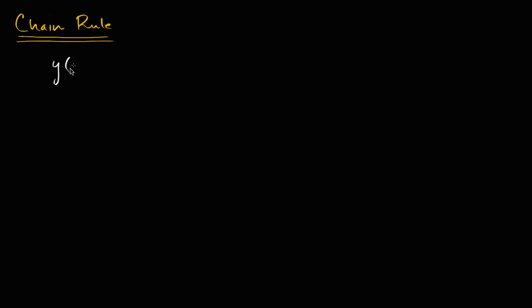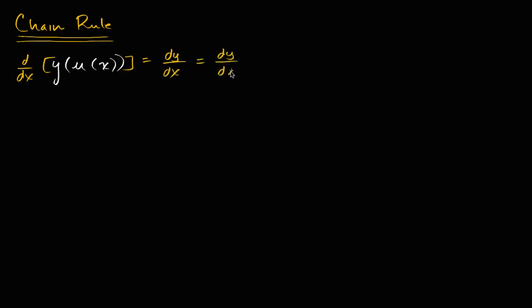The chain rule tells us that if y is a function of u, which is a function of x, and we want to differentiate this with respect to x, we could write this as the derivative of y with respect to x, which is going to be equal to the derivative of y with respect to u times the derivative of u with respect to x. This is what the chain rule tells us.